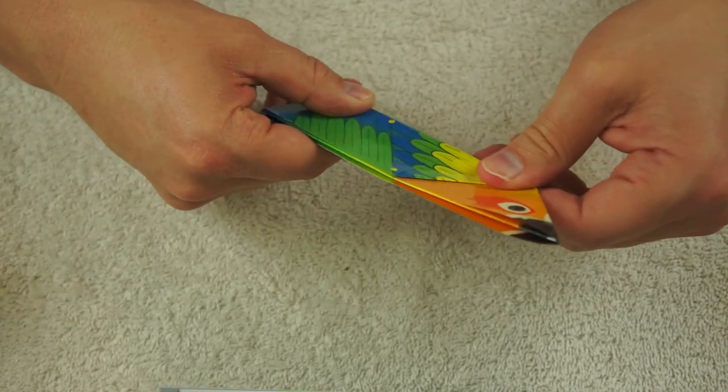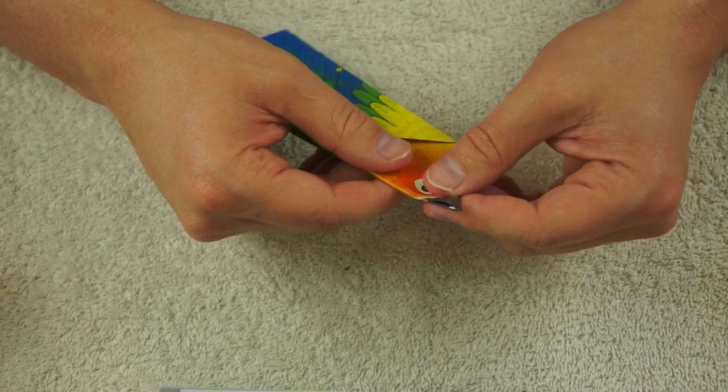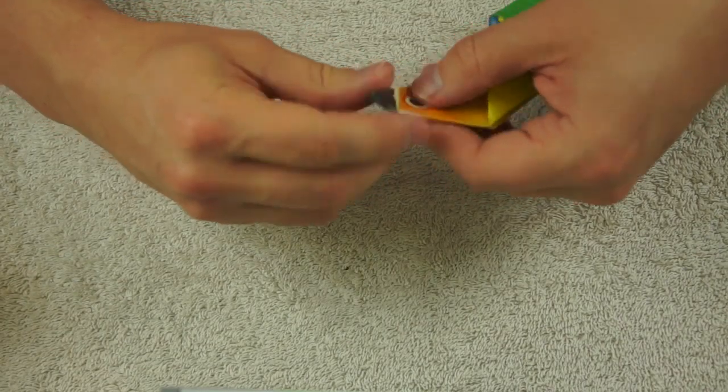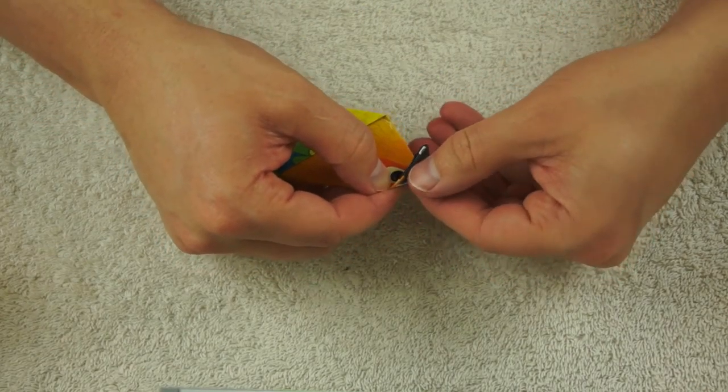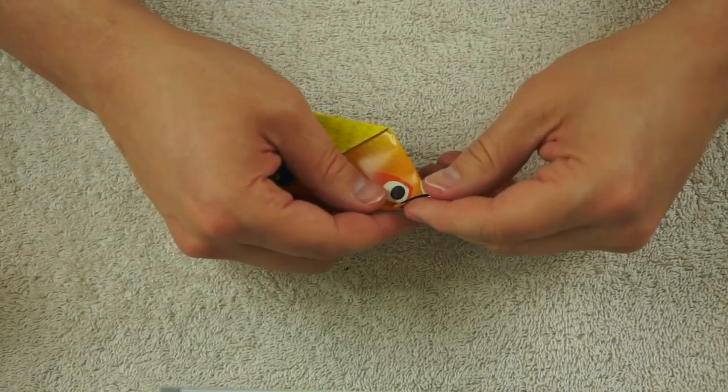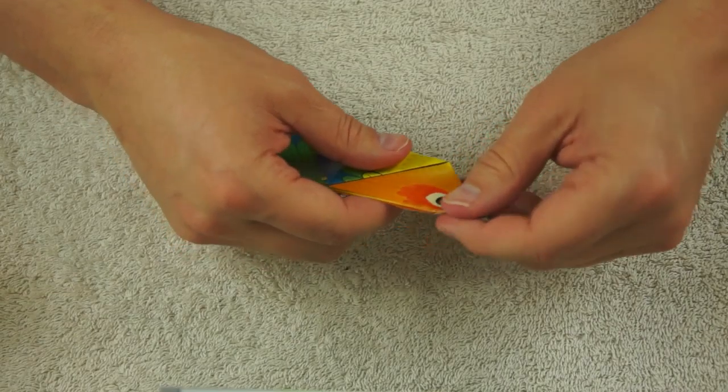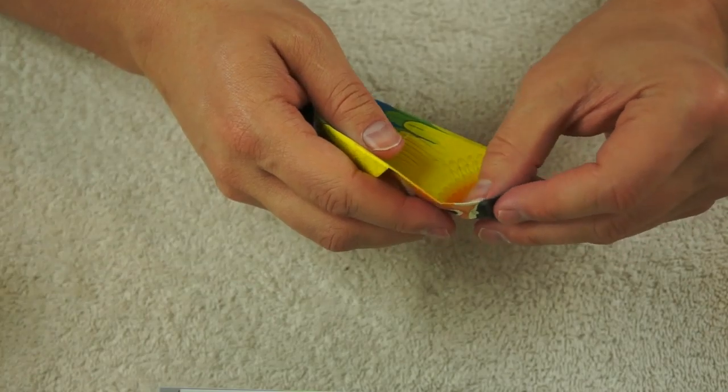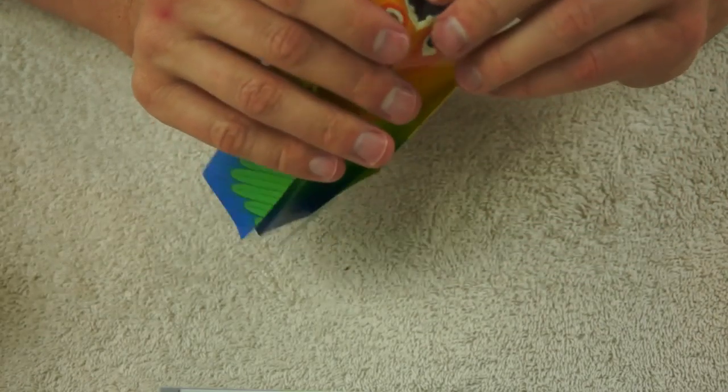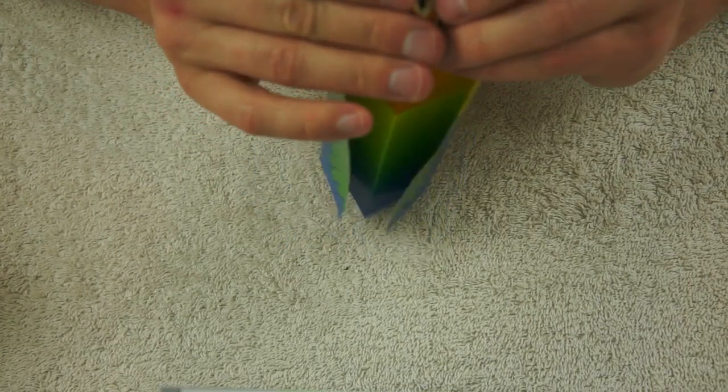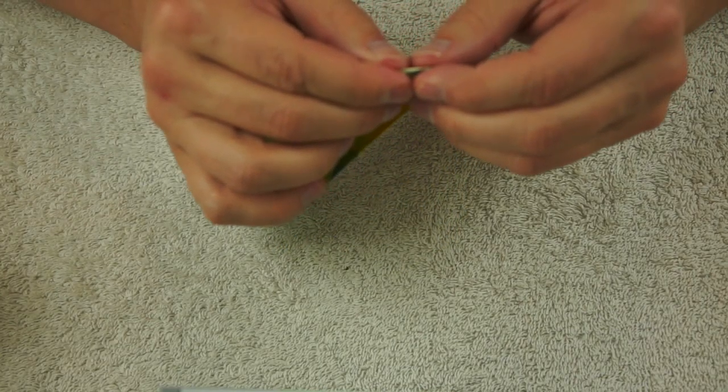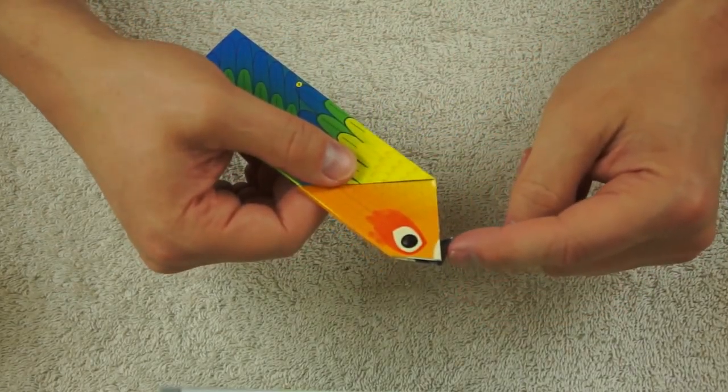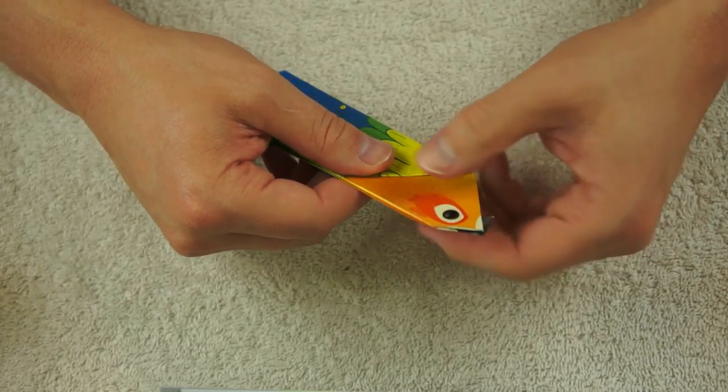Now fold beak on line H-I and then unfold. So that goes like that. And we unfold it, and we tuck it down inside here like that, so his little beak sticks out.